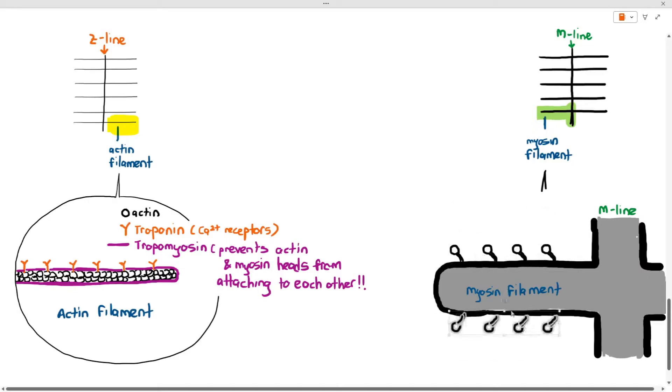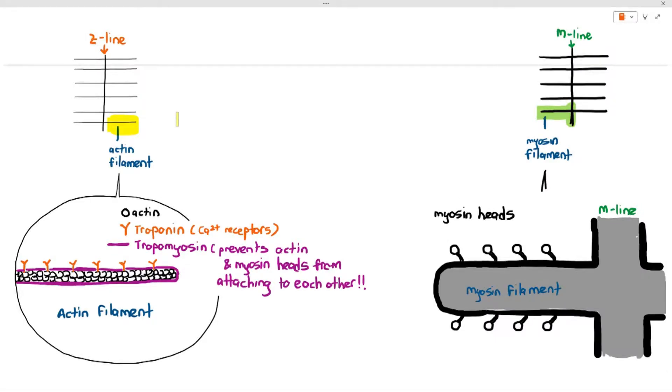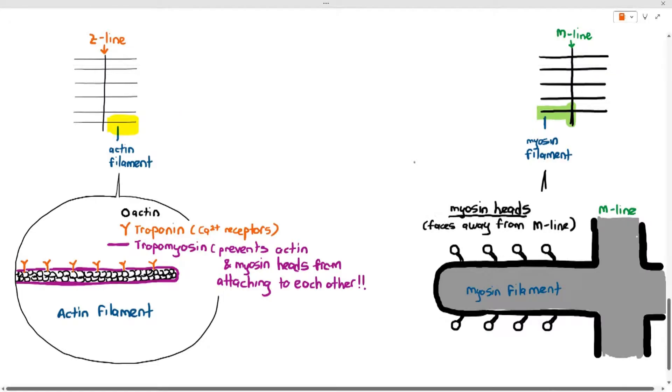Now the myosin filament itself on its structure has this weird extension that is coming out, like many arms or many tiny heads if you can call it that. Those many tiny heads are referred to as the myosin heads.